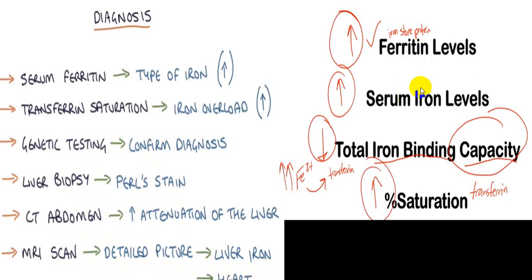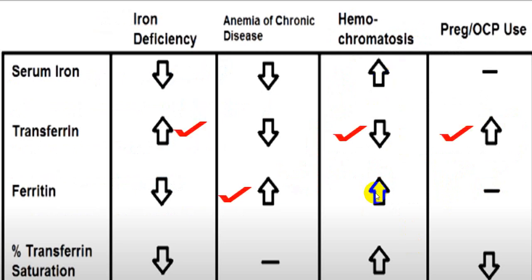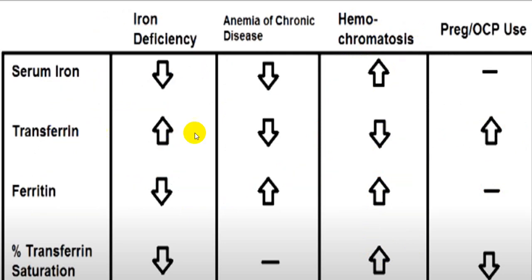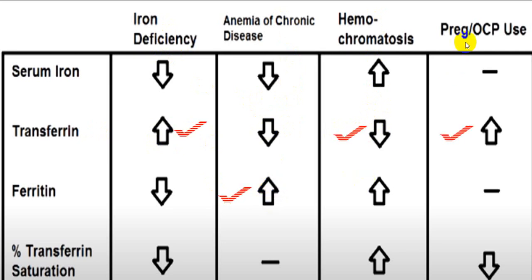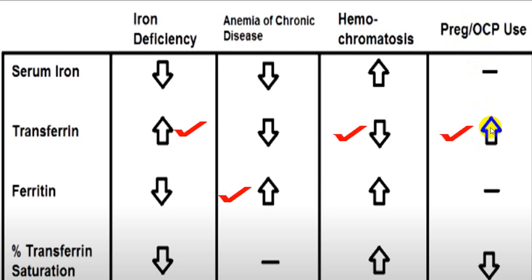To summarize patterns: in hemochromatosis — serum iron high, ferritin high, saturation high, but TIBC (transferrin) low. In iron deficiency — TIBC high. In anemia of chronic disease — TIBC low and ferritin level high. One additional condition that changes TIBC: during pregnancy and in females on oral contraceptive pills, there is an increased level of TIBC — do keep this in mind as it can change your picture.